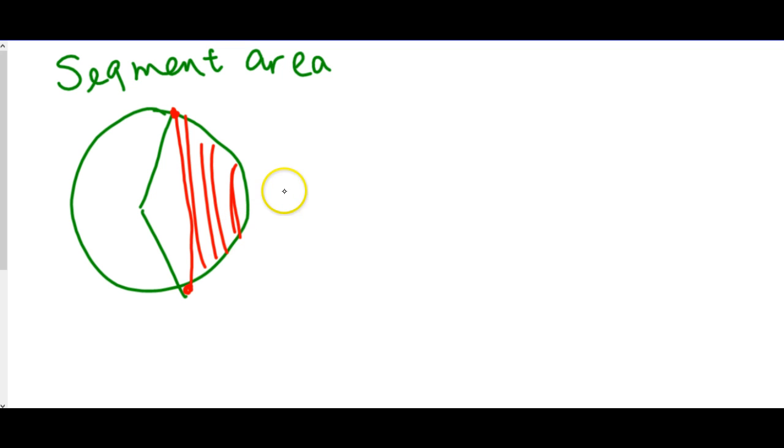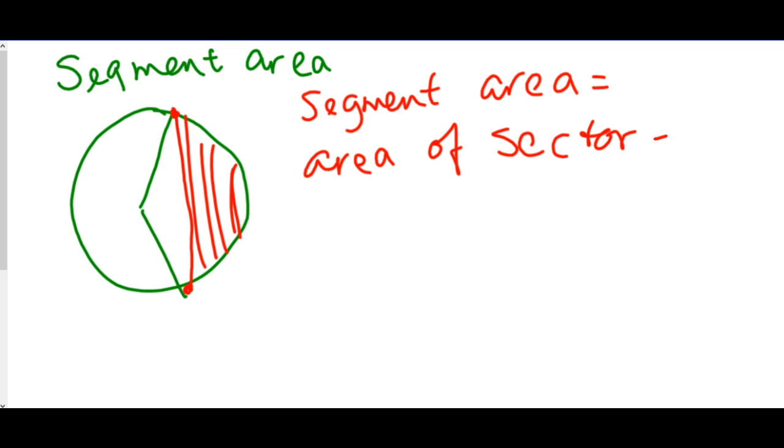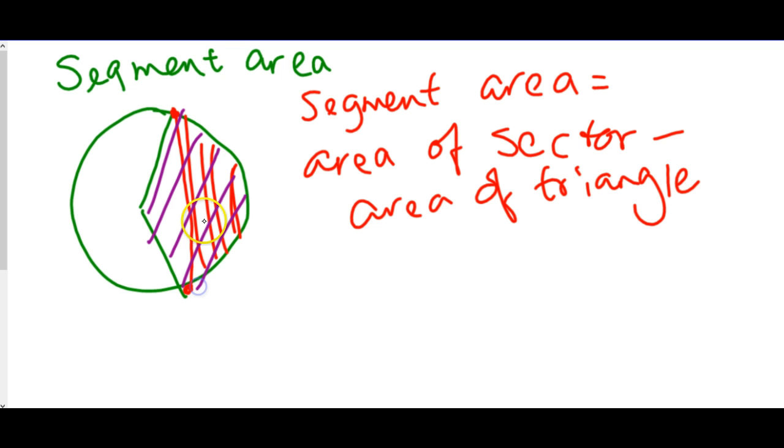Looking at this, segment area would be the area of the entire sector minus that triangular shape we have that we don't want to be part of the area. So segment area is the entire sector, but then we want to take away this triangular area so that we're only left with the red. Let's say we know this angle, that it's 120 degrees. And we know the radius and it's 16.